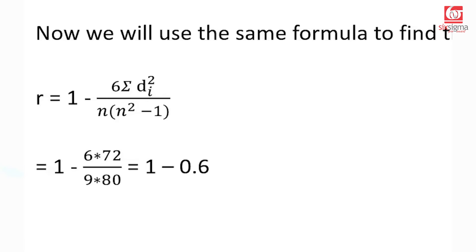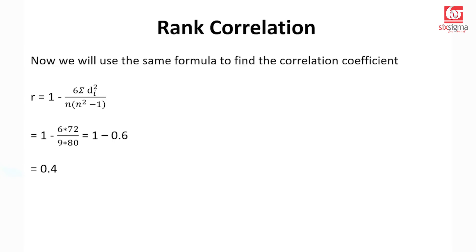Let's apply this. So di square, if we add that column that we saw on the previous slide, it will be adding up to 72. n in our case is 9, so we will get the value 9 here. And n square, which will be 81. 81 minus 1 would be 80. So when we solve this, we get a value which is 1 minus 0.6, and that leads us to 0.4. That's the Spearman's rank correlation coefficient for the specific data that we talked about.